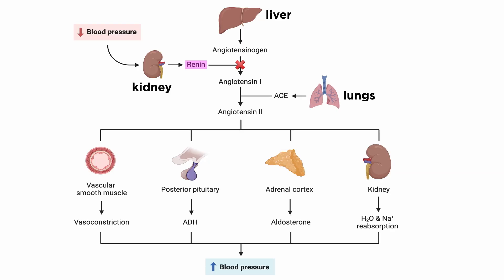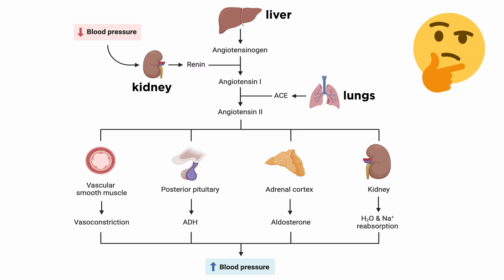By inhibiting the rate-limiting step of the RAAS, angiotensin-2, aldosterone, and antidiuretic hormone functionality is attenuated. As a result, significantly less water is reabsorbed by the renal system and blood pressure decreases. For more information on the RAAS and the function of angiotensin-2, refer to the previous tutorial on ACE inhibitors.